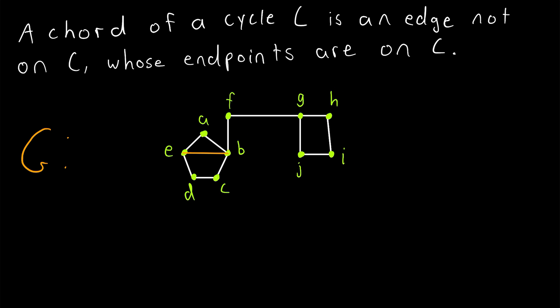If we look at this cycle over here, this is an example of another chord joining H and J. It's an edge that's not on the cycle, we see this edge is not on this cycle, but its endpoints are on the cycle. H and J are part of this cycle.